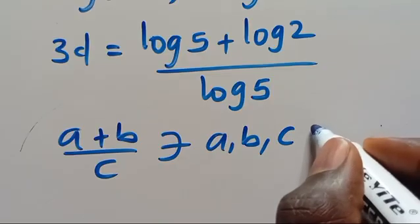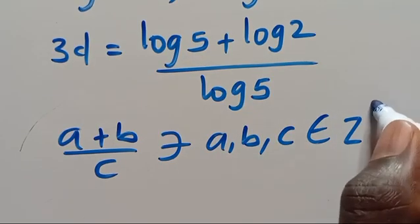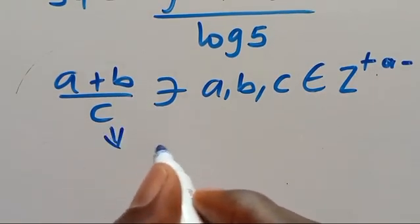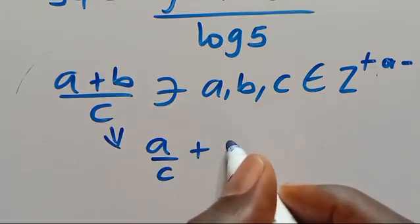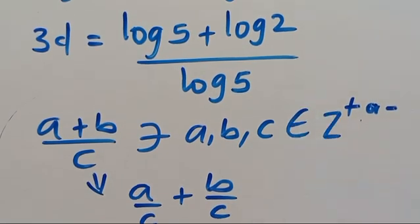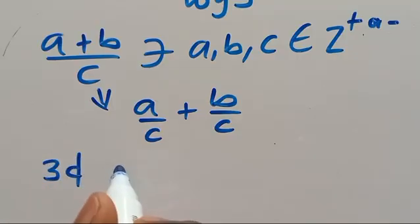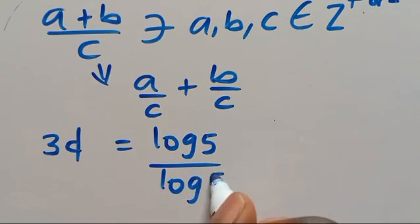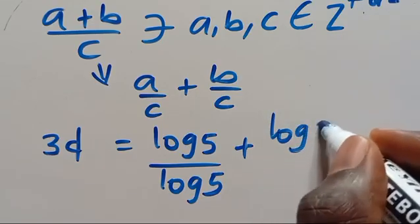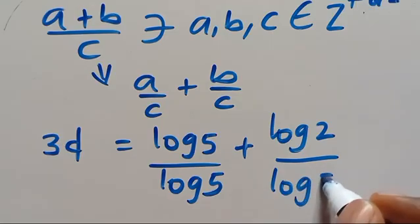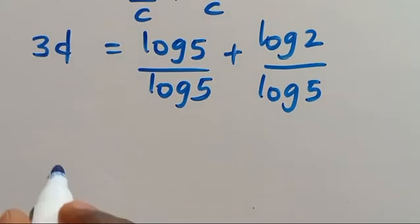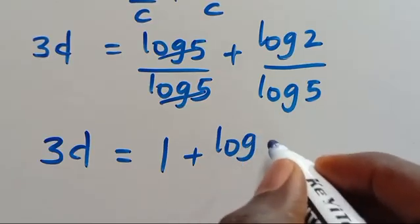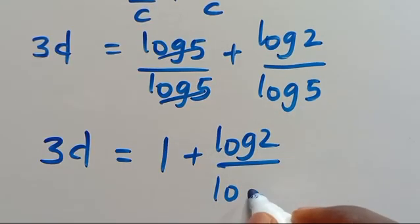So when we apply the product rule here, we get 3D equals log 5 plus log 2, divided by log 5. Then recall that A plus B divided by C can be simplified to A divided by C plus B divided by C. So we have 3D equals log 5 divided by log 5 plus log 2 divided by log 5.